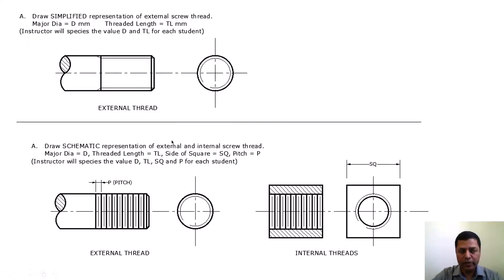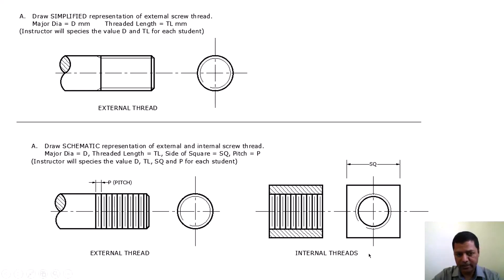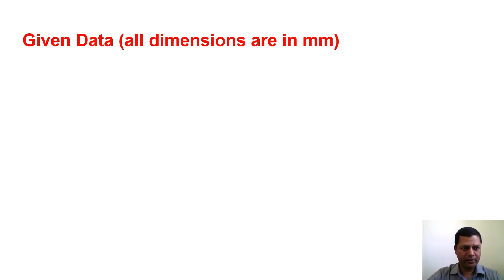We will open AutoCAD and draw all three shapes in the same file as per the data given in the lab manual. The data includes: major diameter D, minor diameter calculated as 85 percent of D, 45-degree chamfer angle, 30-degree thread runout angle, and the threaded length provided by your teacher. The teacher may give different parameters to each student. We will draw the simplified external thread, the schematic external thread, and the schematic internal thread all in one AutoCAD file.